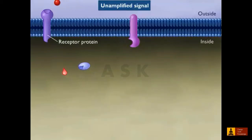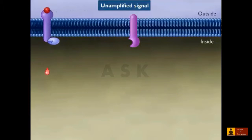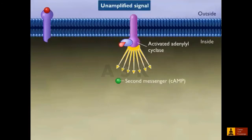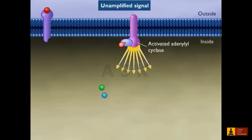Receptor proteins interact with signal molecules at the surface of the cell. In most cases, the signals are relayed to the cytoplasm or the nucleus by second messengers, which influence the activity of one or more enzymes or genes inside the cell.